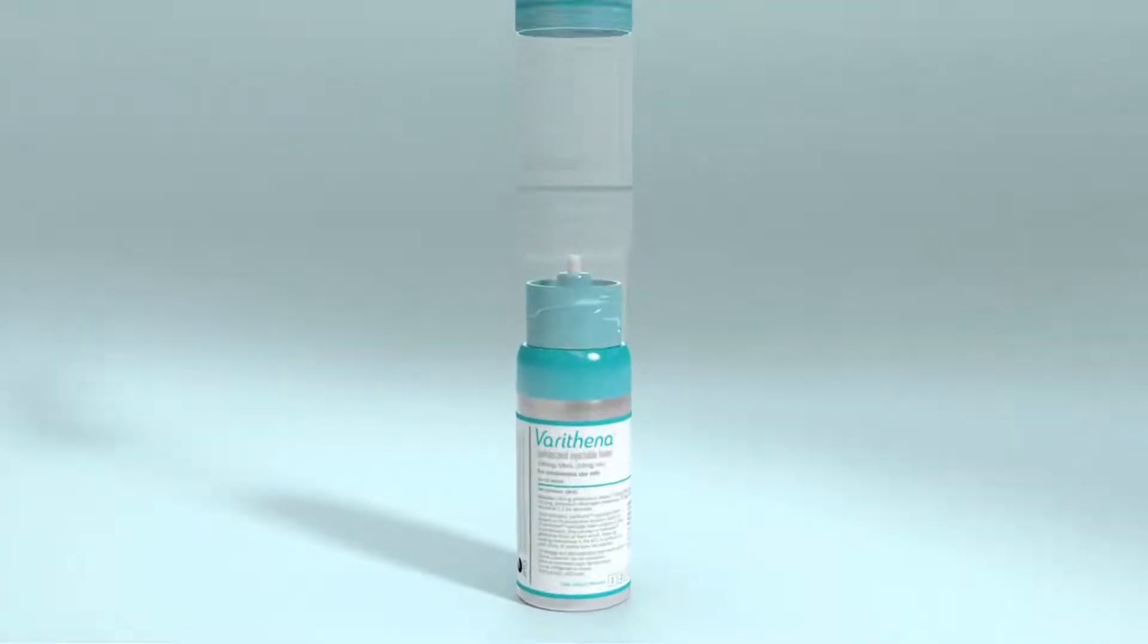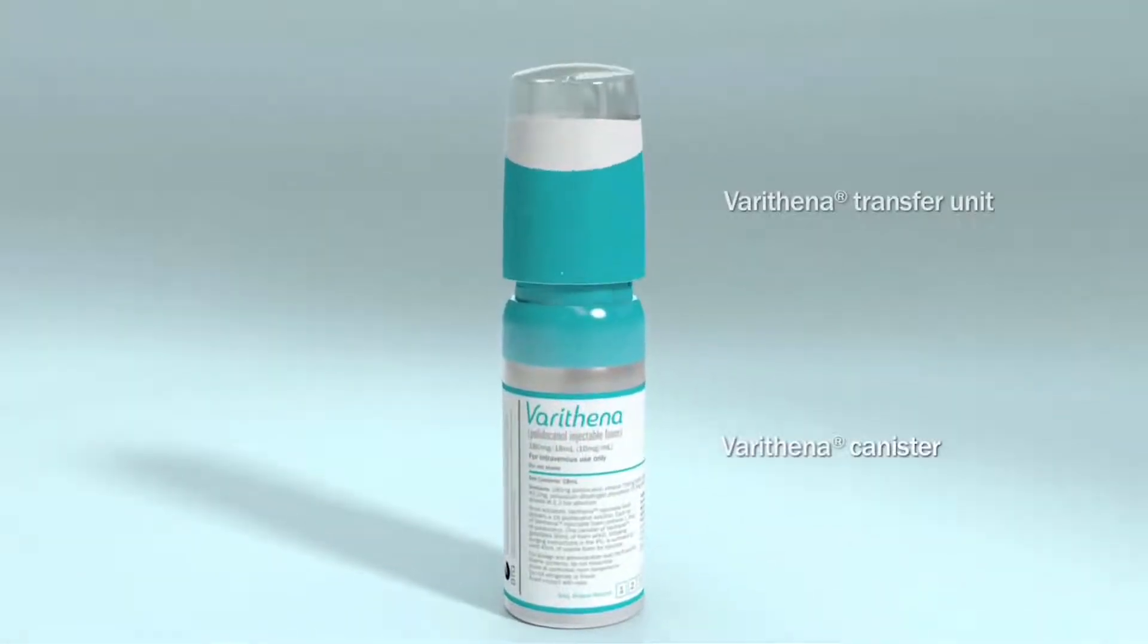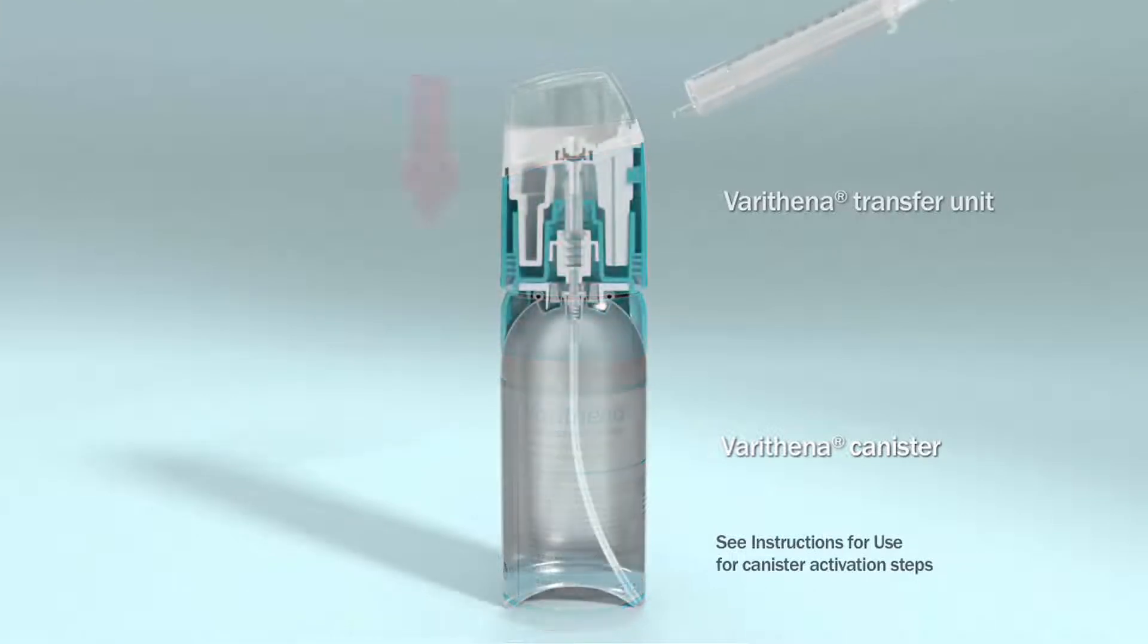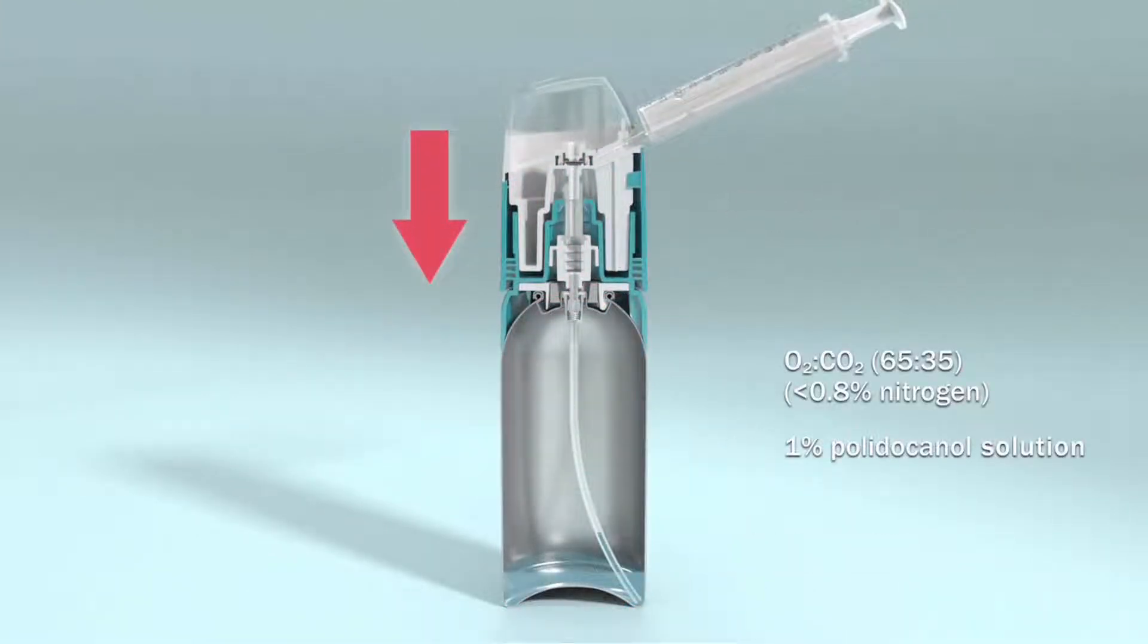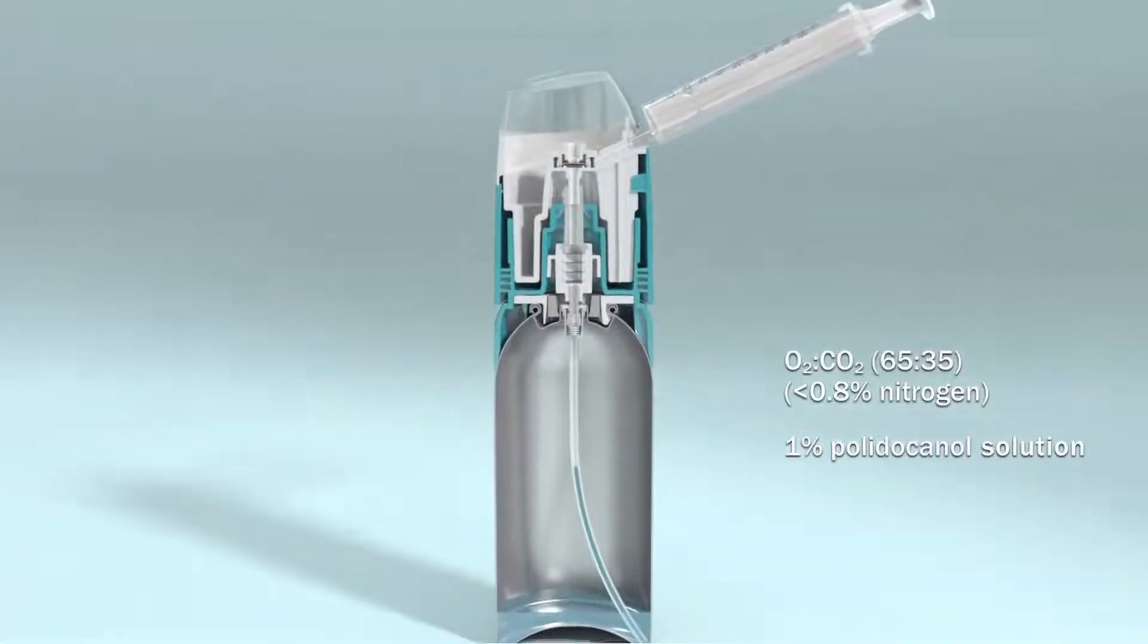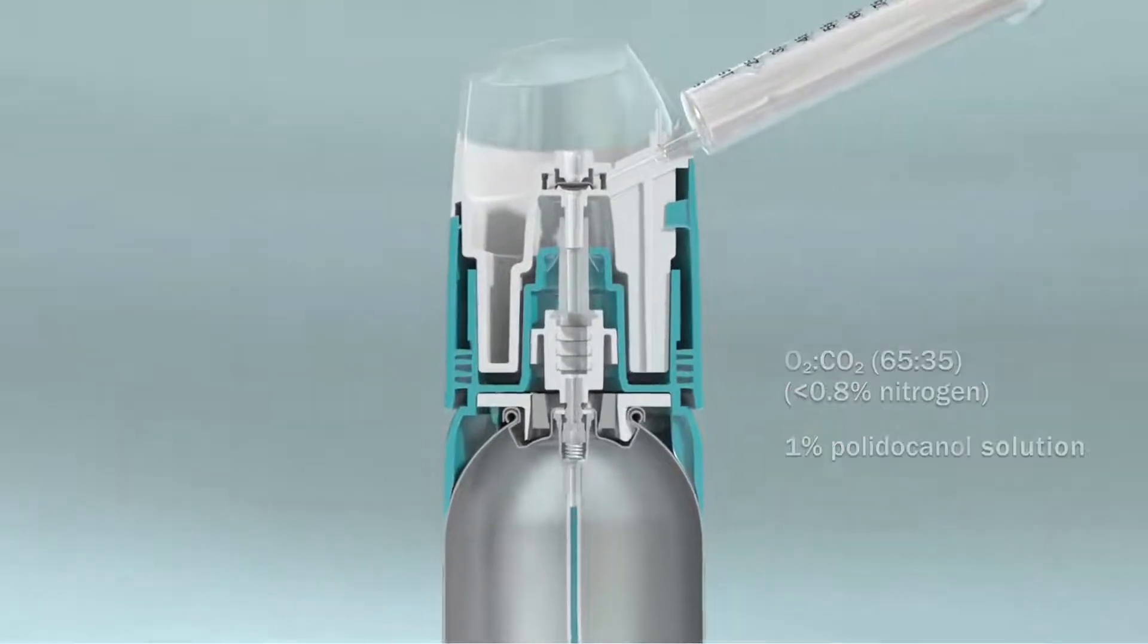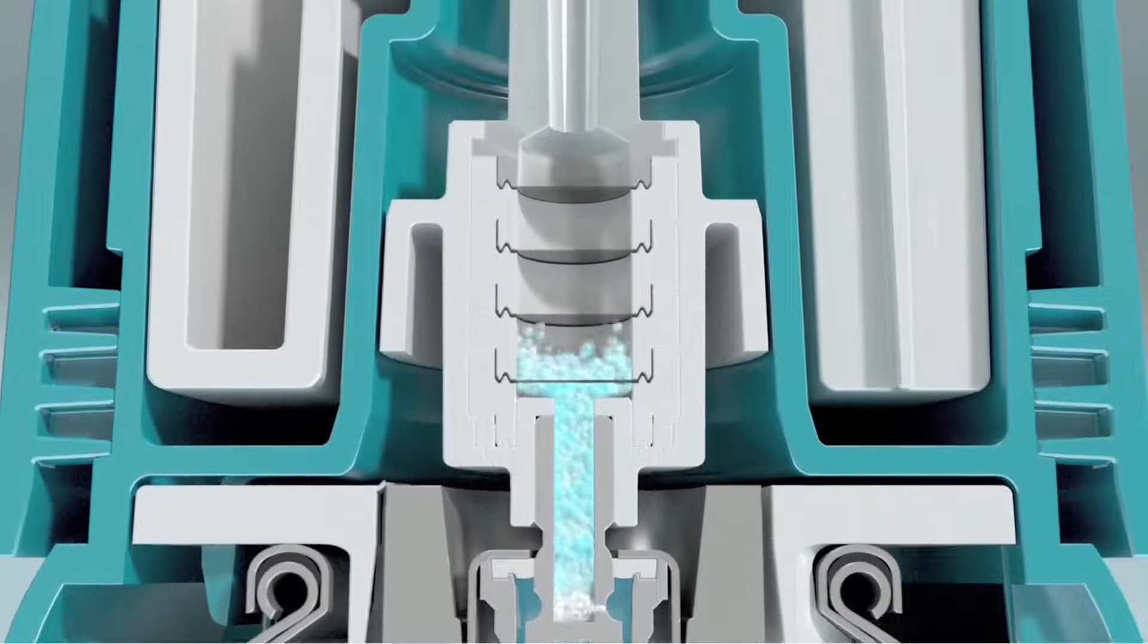After the Varathena canister has been activated, the Varathena transfer unit is firmly pressed down. The oxygen-carbon dioxide gas mixture and the 1% polydokanol solution are drawn up and enter the shuttle meshes where the microfoam is conditioned.